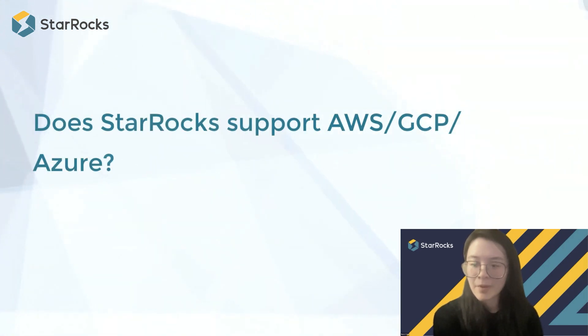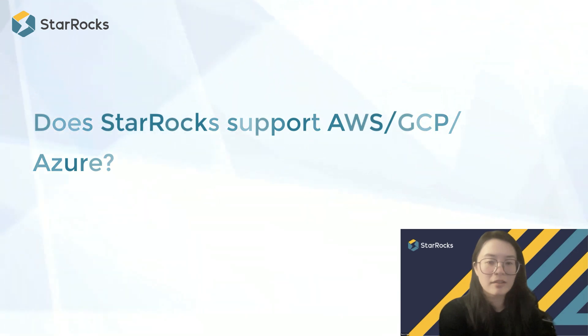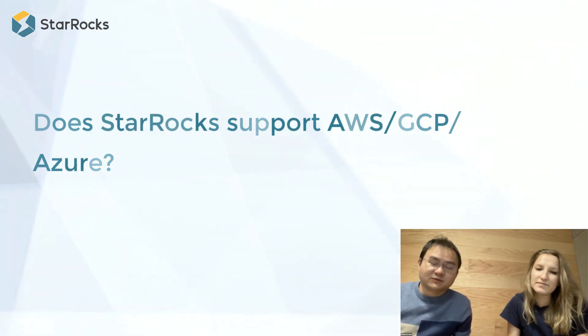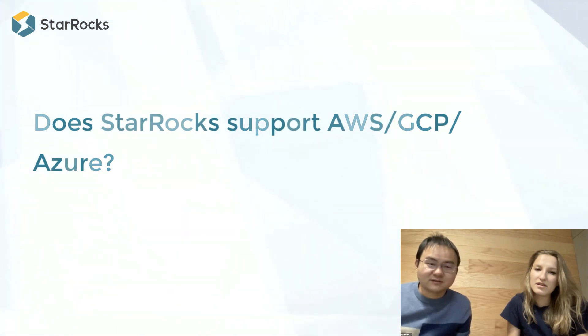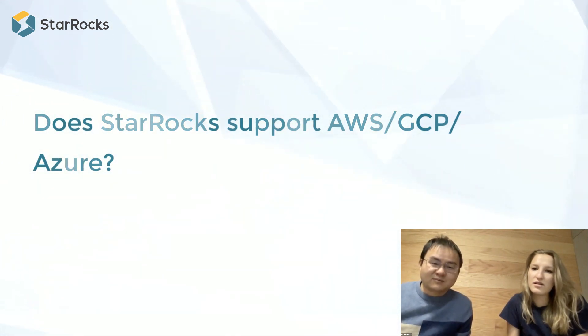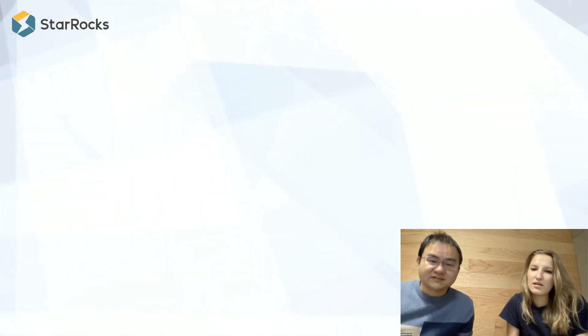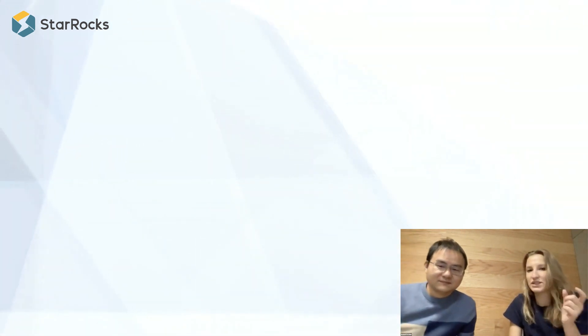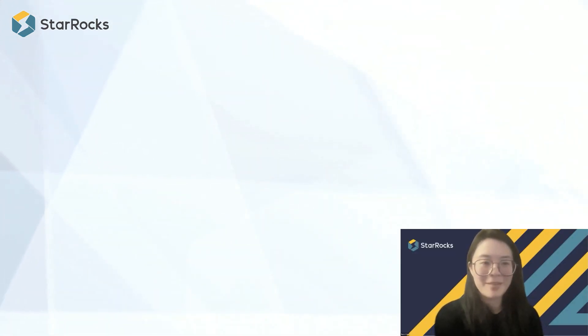Next question: does StarRocks support AWS, GCP, Azure? We currently have a SaaS service on AWS. If you have virtual machines like EC2 on GCP or Azure, that's okay, but the managed cloud service is not yet ready for GCP and Azure. We plan to move to a multi-cloud environment for our SaaS service in the future. For now you can use the SaaS service on AWS, and there's also an AWS Quick Start on the marketplace where you can deploy with a button click.